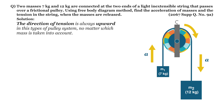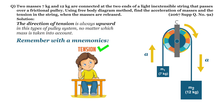The direction of tension is always upward in this type of pulley system, no matter which mass is taken into account. Tension is always on the head, not on the feet — this means tension always acts towards the top, in the upward direction. By this analogy, in this problem the tension acts in the upward direction.